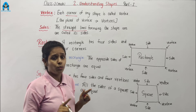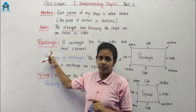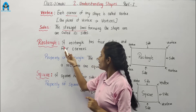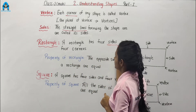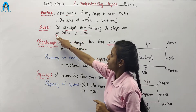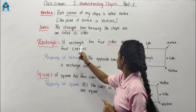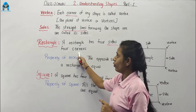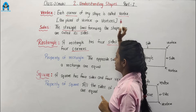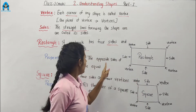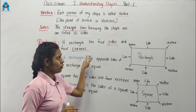Let's start with our first shape. Which is our first shape? It's rectangle. What is rectangle? A rectangle has four sides — straight lines — and four corners.